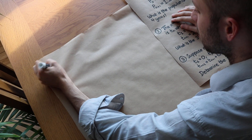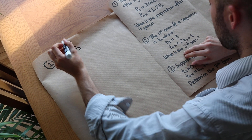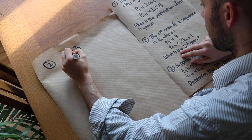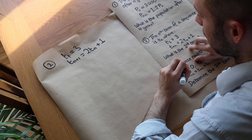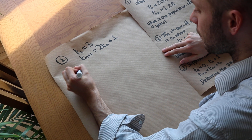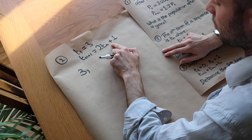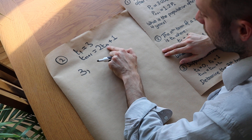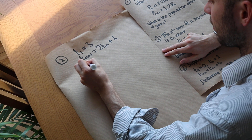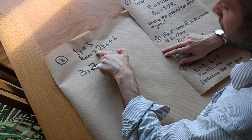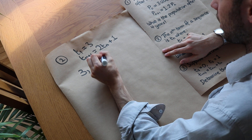Now let's look at this second question. The nth term of the sequence is tn, where t1 equals 3, and tn+1 equals 2tn plus 1. What is the third term? The first term is 3. Then t2 equals 2 times t1 plus 1, so 2 times 3 is 6, plus 1 is 7. The third term is 2 times t2 plus 1, so 2 times 7 is 14, plus 1 is 15.